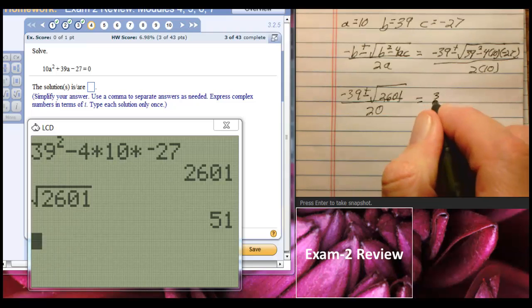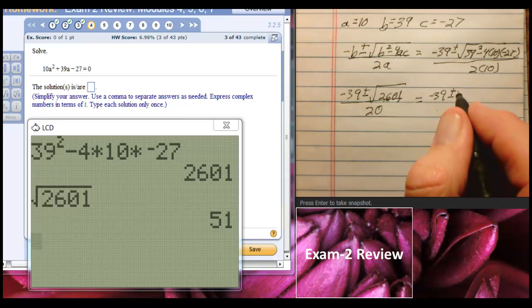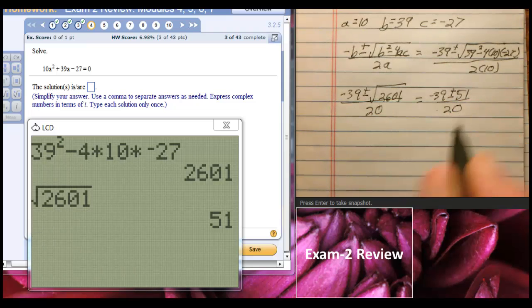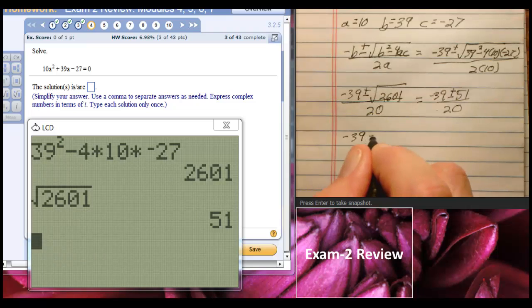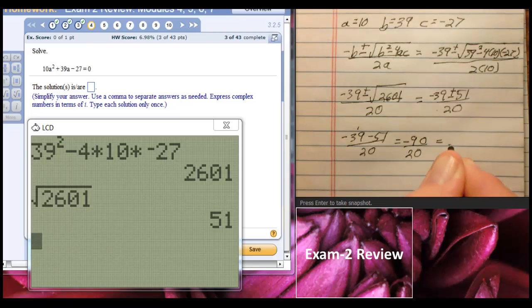So we're going to have negative 39 plus or minus 51 over 20. So one of our solutions is going to be negative 39 minus 51 over 20. That will be 9 plus 1 is 10, carry the 1, 8 plus 1 is 9. We'll have negative 90 over 20, which will be negative 9 over 2.